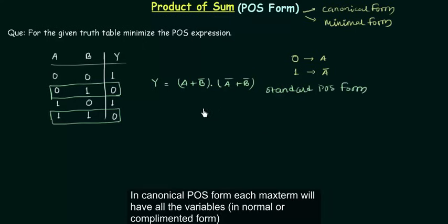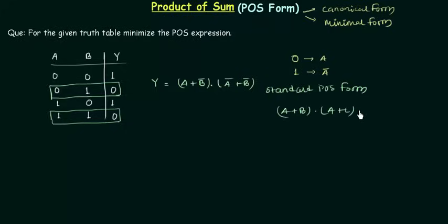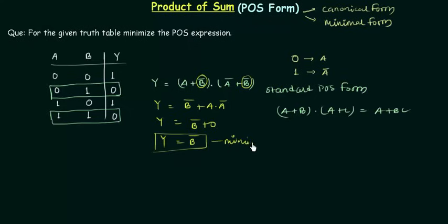Now we can use the Boolean algebra to minimize this canonical or standard POS form to the minimal one. I will use the distributive law. If we have a or b and a or c then I can write it as a or bc. In the same way I have b complement as common so I will write y equals to b complement or a and a complement. A and a complement is definitely equal to 0. So finally y is equal to b complement and this one is the minimal form.